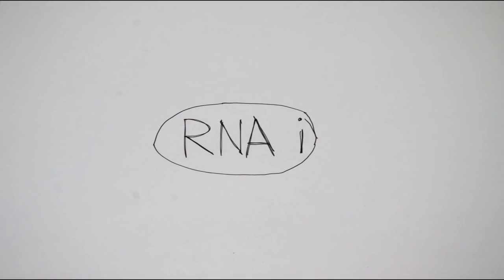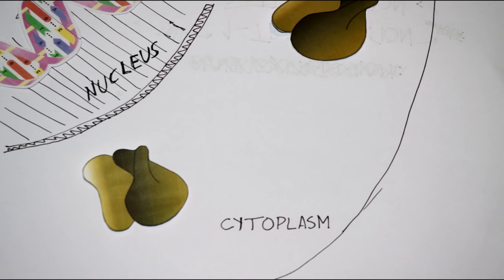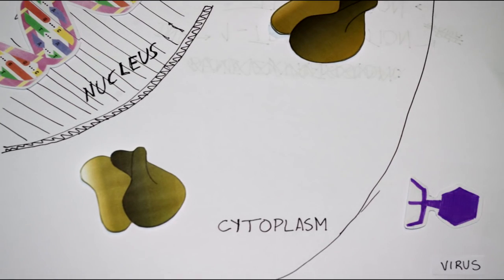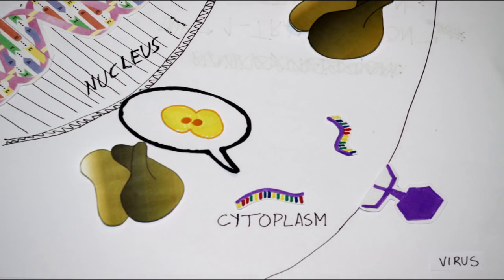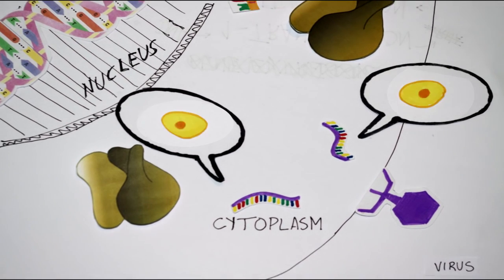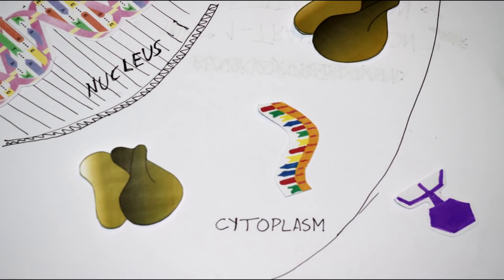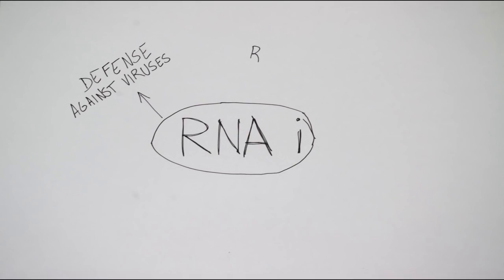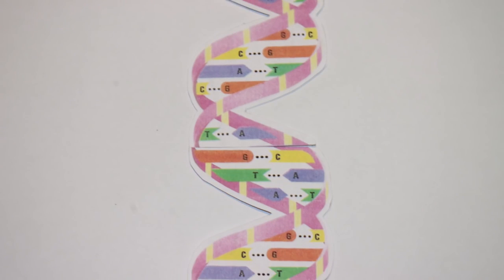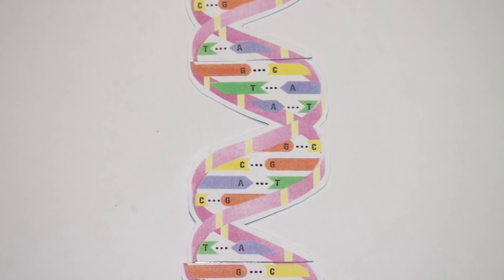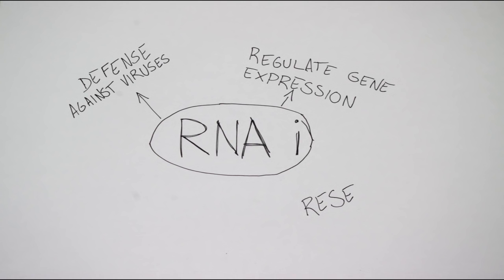This mechanism acts as a defense weapon against viral infections. As some type of viruses attack organisms by injecting their genetic material on their cells, giving the wrong instructions, siRNA can be used to eliminate these instructions. It's also important to regulate gene expression.